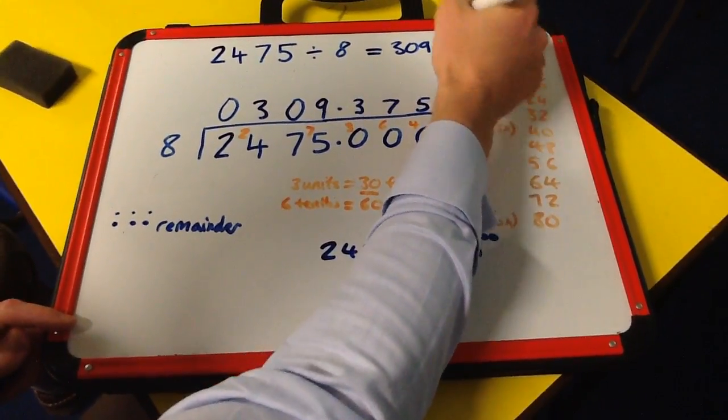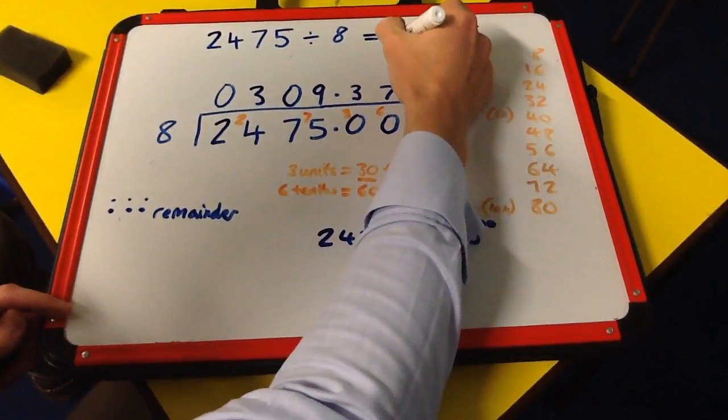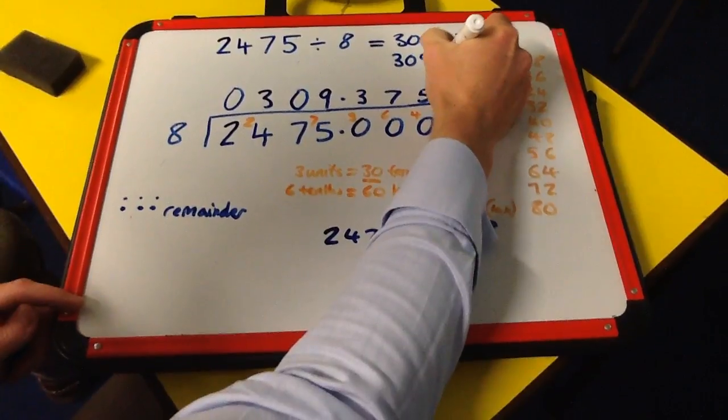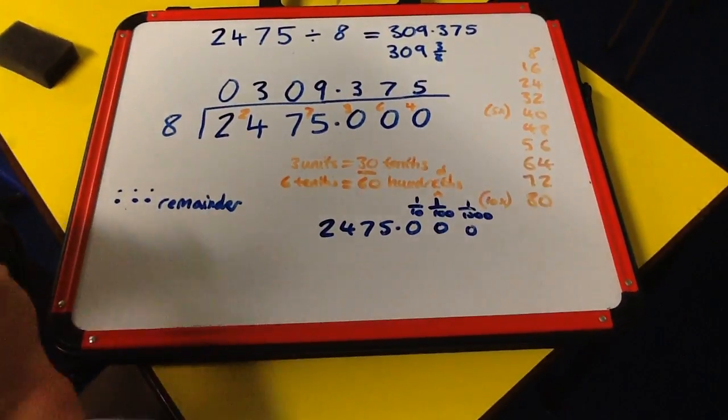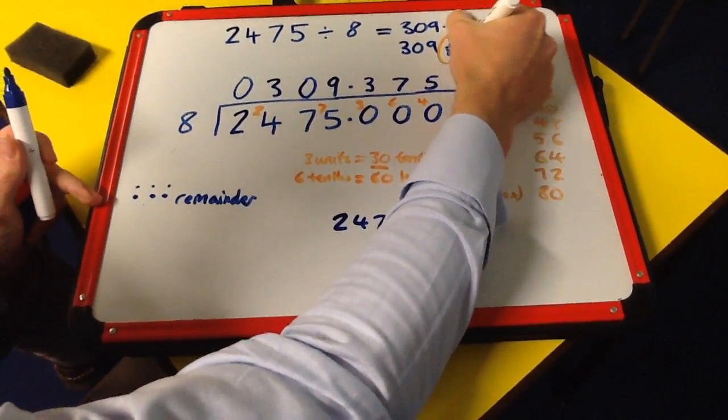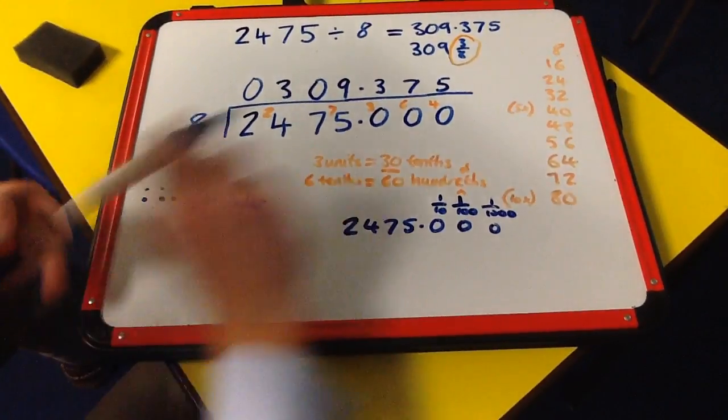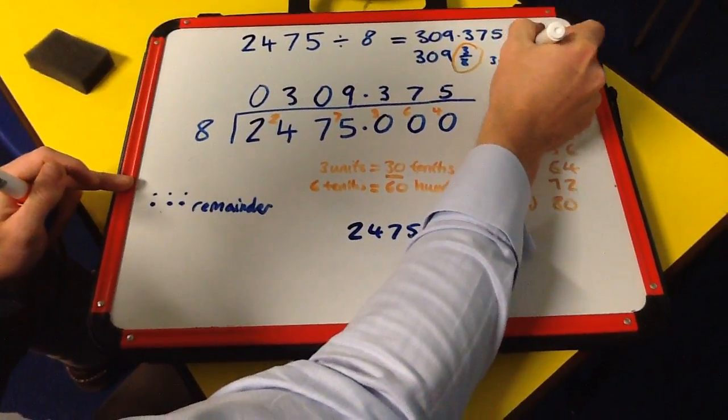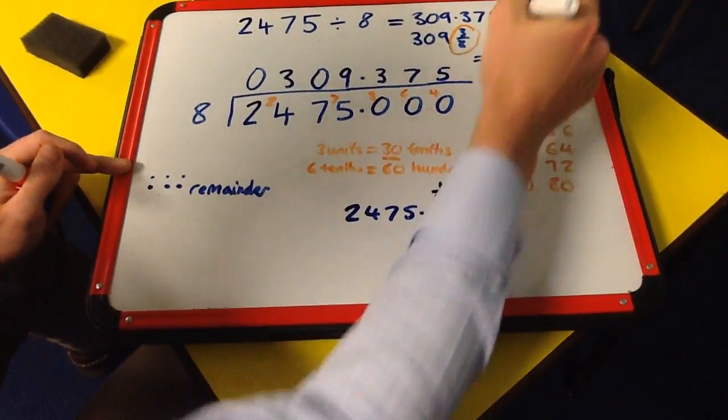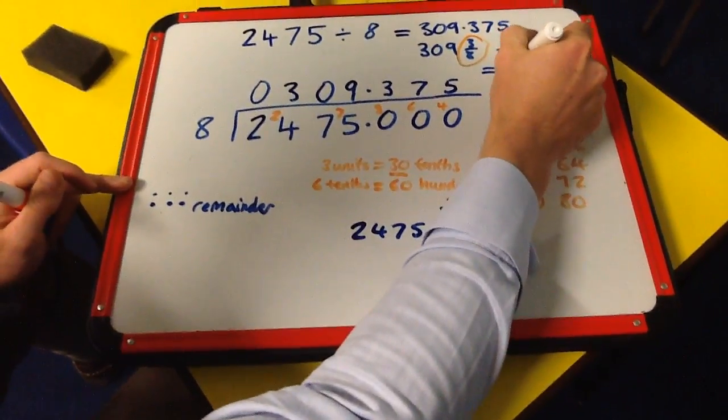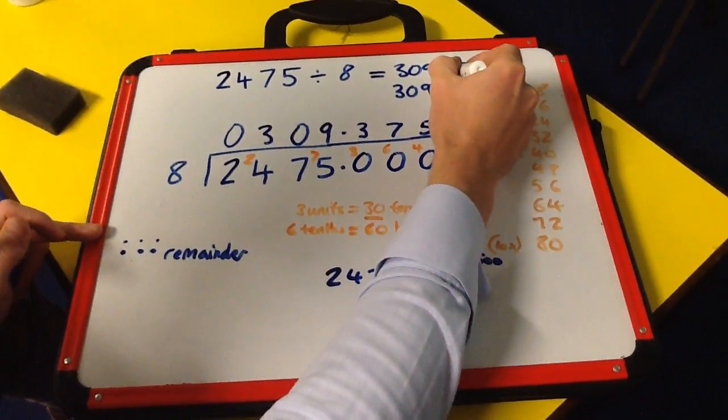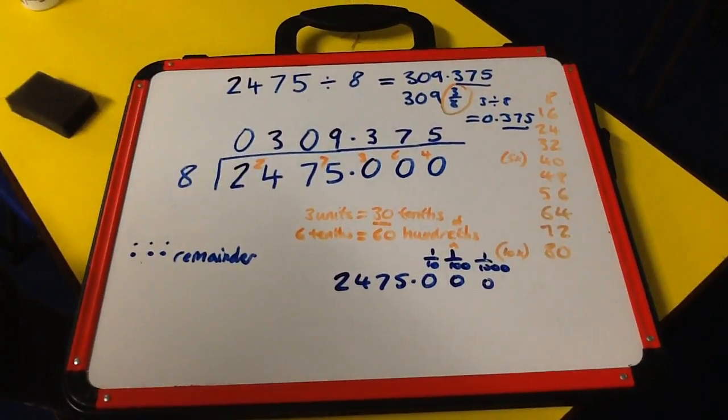309.375 is our answer. Remember from the last video it was 309 and 3/8. If you put 3 divided by 8 into a calculator, you get 0.375, confirming our decimal conversion.